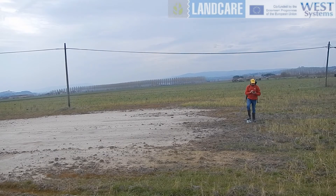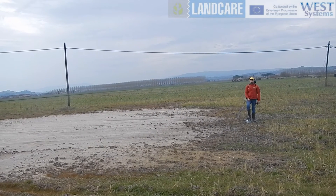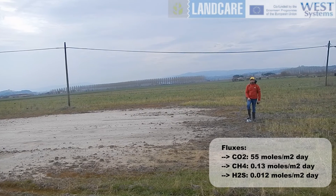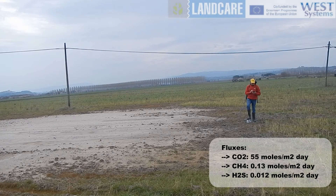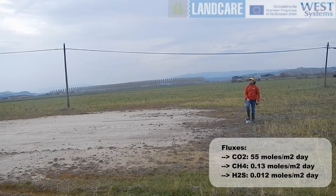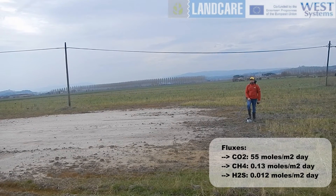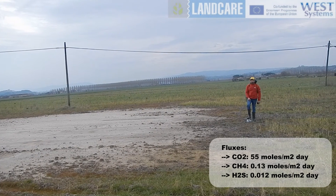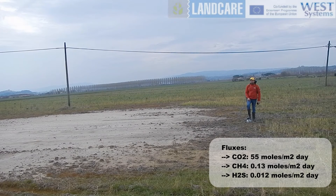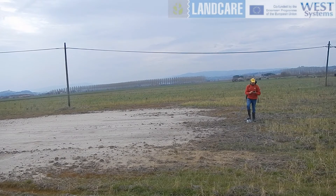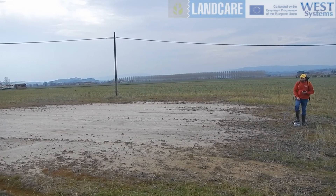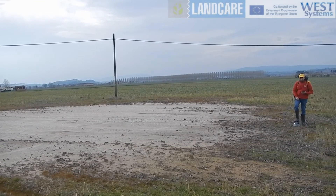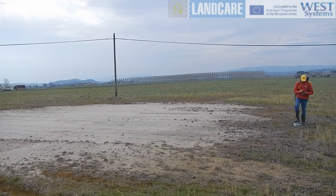Computing these concentration gradients, we observe that for this sampling point we have a carbon dioxide flux of 55 moles per square meter per day, a methane flux of 0.13 moles per square meter per day, and a hydrogen sulfide flux of 0.012 moles per square meter per day. These values represent a very important anomaly. Every square meter of this area emits about 2.5 kg of carbon dioxide and 2 grams of methane — equivalent to about 50 grams of carbon dioxide equivalent every day.